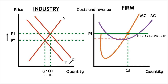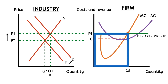Multiplying average revenue or price times Q1 gives us our area for total revenue, bordered in blue. Multiplying average cost by Q1 gives us our total cost, bordered in red. Since total revenue exceeds total cost, this firm is said to earn supernormal profits.